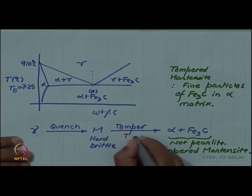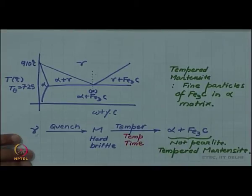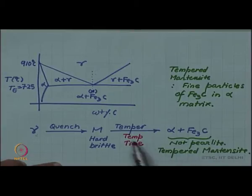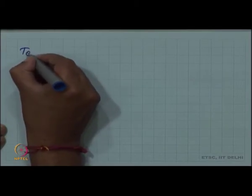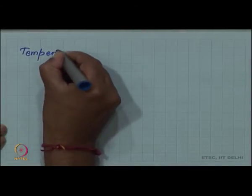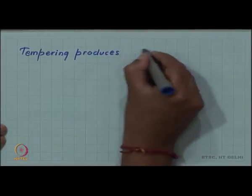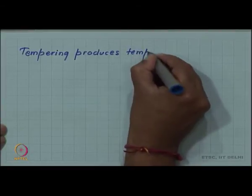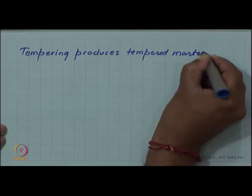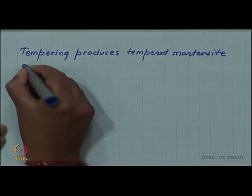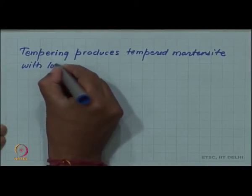Tempering has two variables, the temperature and the time. We have two variables to control temperature and time and depending on the way we control this, we will get particles of Fe3C in different sizes and different distribution. Tempering produces tempered martensite with lower hardness.